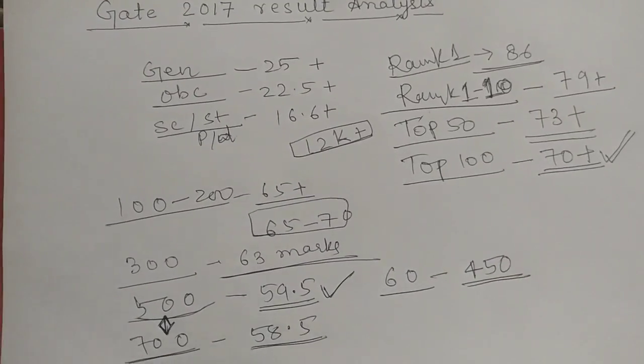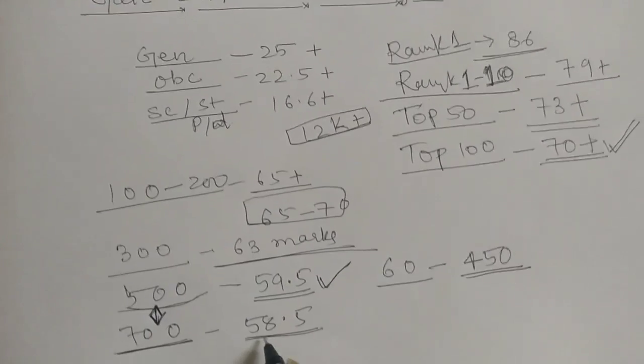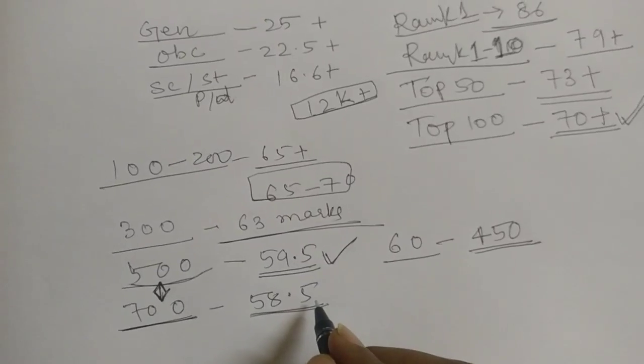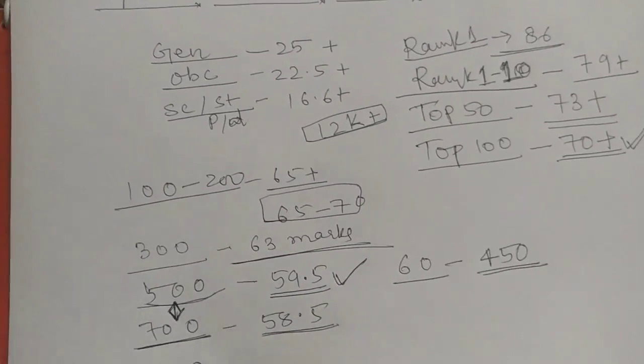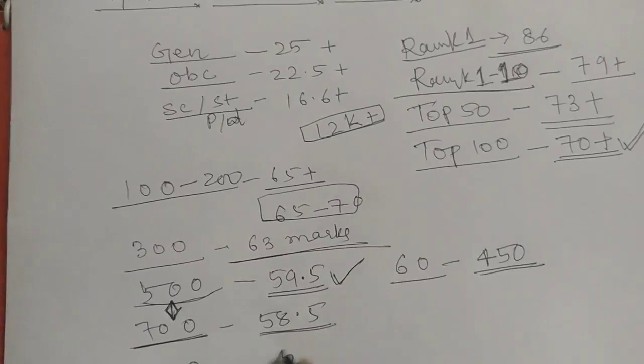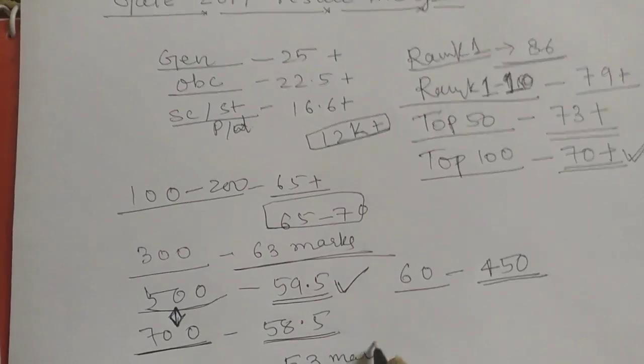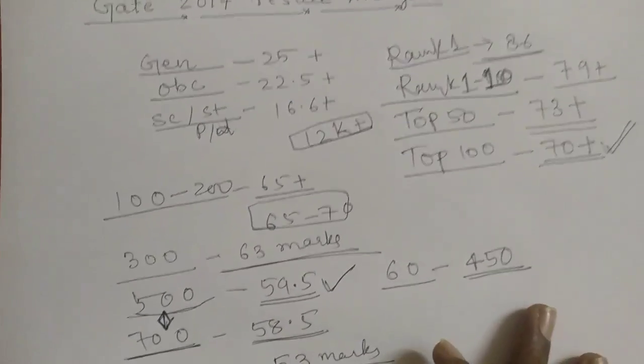This year to get a rank under top 700, the candidates got 58.5 marks. Similarly, for 1000 rank, the cutoff was 53 marks. So, this year 53 marks was the cutoff for 1000 rank.